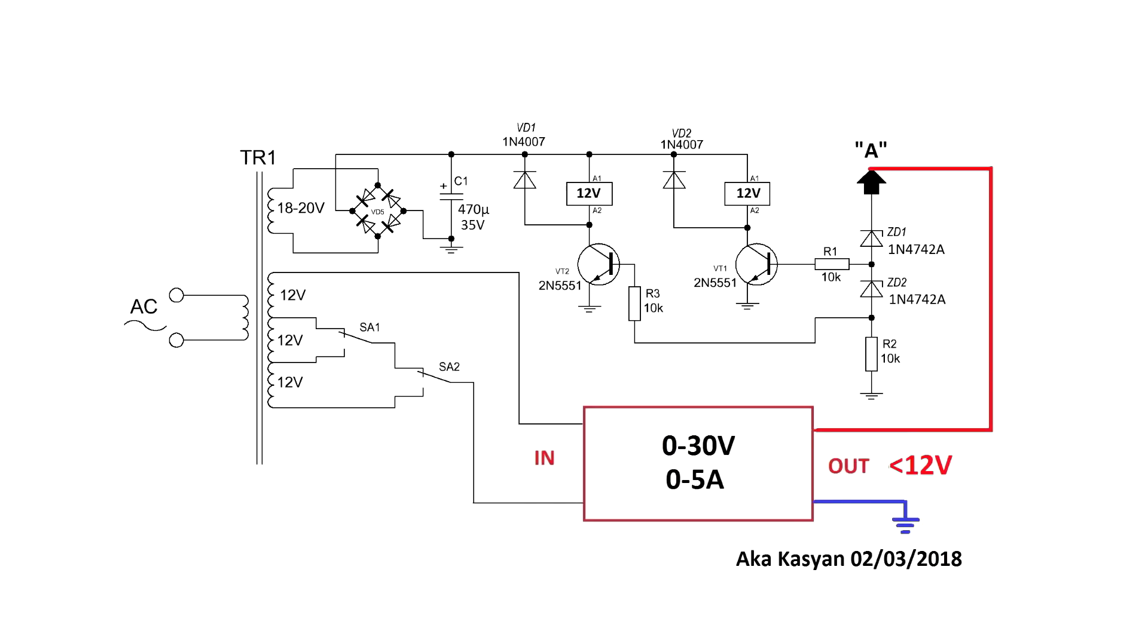If the voltage at the output of the laboratory power unit is greater than 12V, the first zener diode will instantly operate. Through an open transition, the current will flow to the relay winding. As a consequence, the relay will also work and commute the corresponding winding.